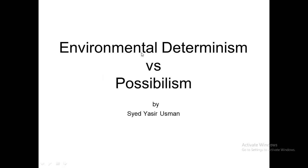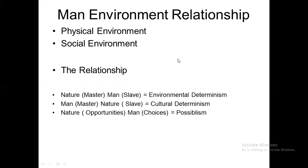There are two main ideas: Environmental Determinism and Possibilism. We define the environment as anything surrounding us. There are two aspects: the physical environment, which includes atmosphere, lithosphere, hydrosphere, climatic conditions, and ground surface conditions — whether we live in a plain or mountainous area. The social environment refers to culture, society, norms, values, and laws.